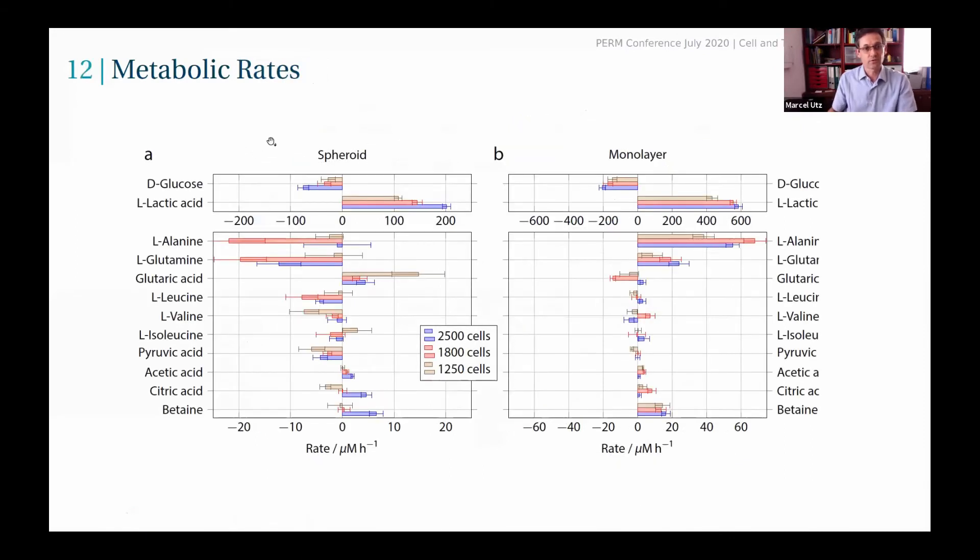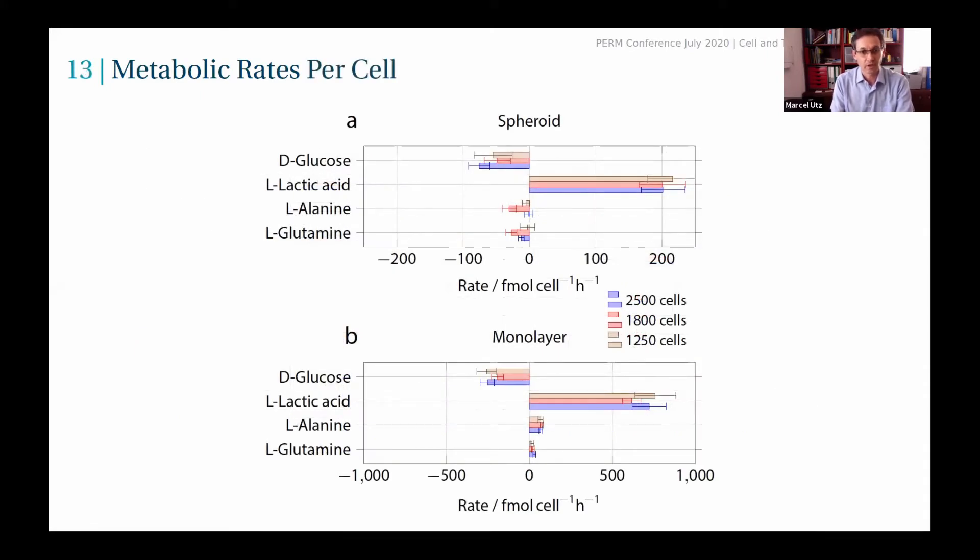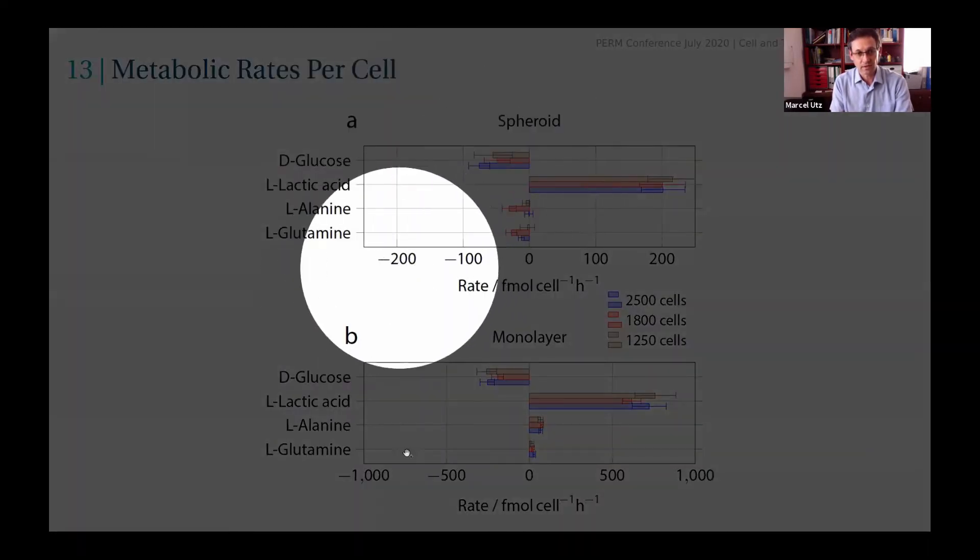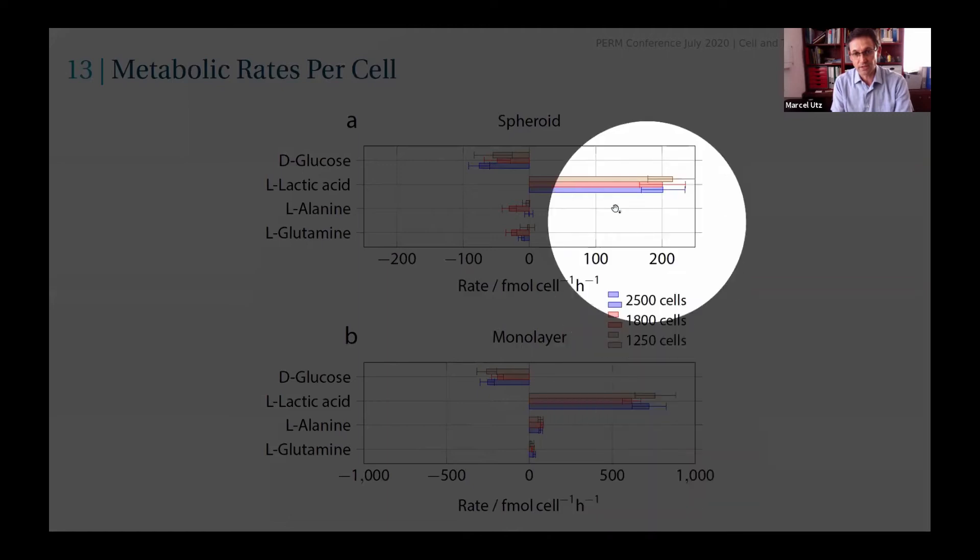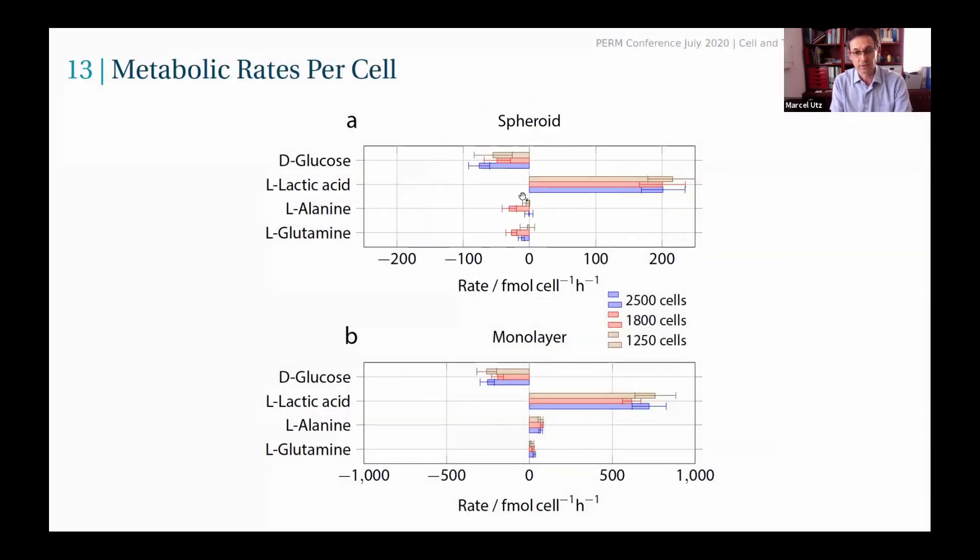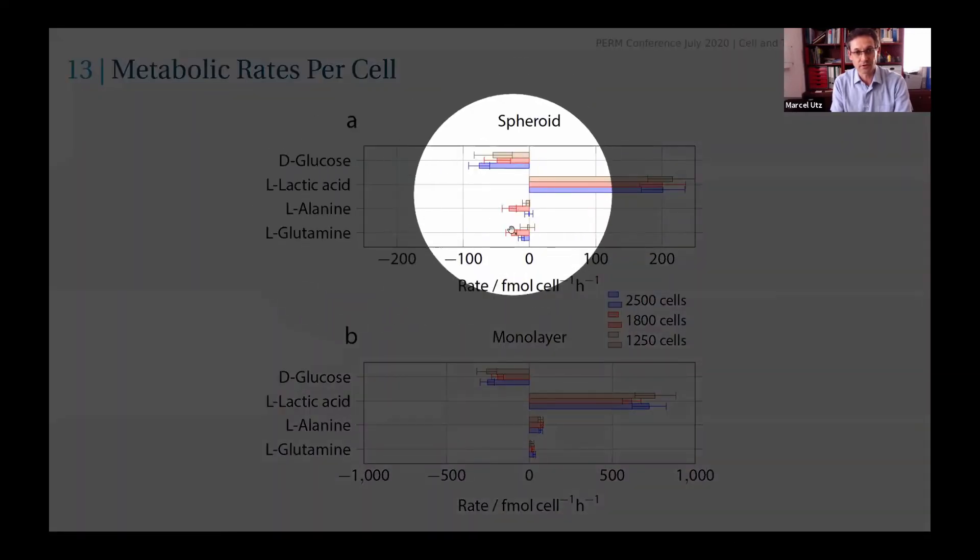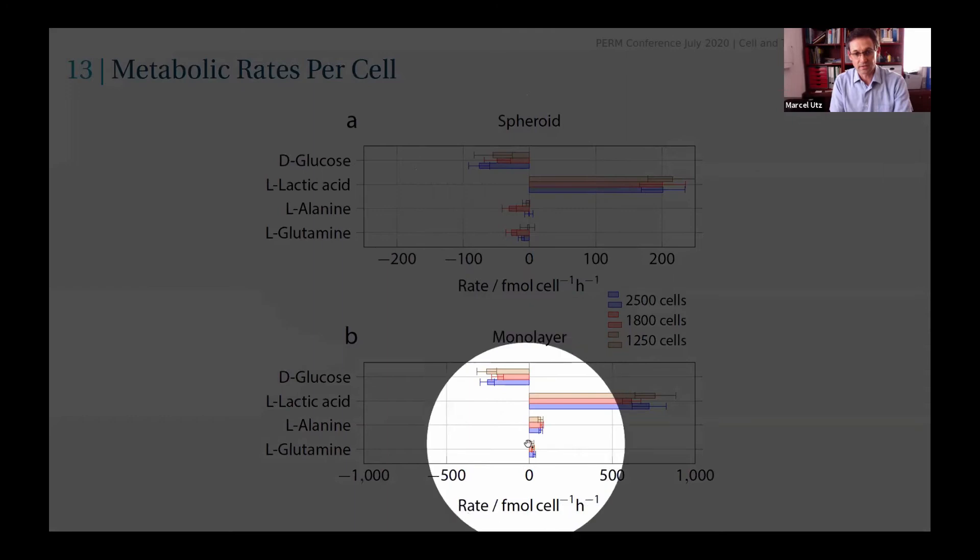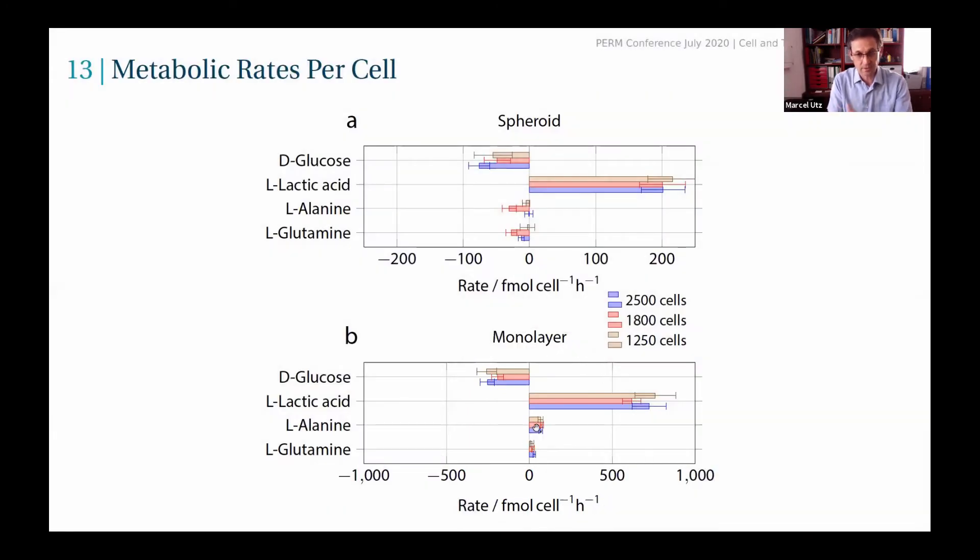Since the metabolite concentrations are linear functions in time, we can then extract metabolic rates and we can compare quantitatively the spheroids and the monolayer cells. On a per-cell basis, we find that the spheroids are much slower in their metabolism. You see that when we change the scale by a factor of five, the graphs look quite similar. There are also some subtle differences—for example, the spheroids don't really produce any alanine, whereas the monolayers do. So the cells actually behave qualitatively differently in these two modalities.